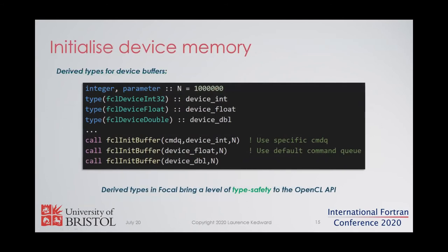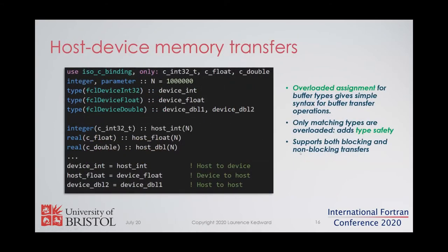We can introduce a few derived types for typed buffers — these are essentially 1D arrays that reside on the device. We have typed buffers for integer, float, and double, and we can initialize these with n elements using the syntax shown here. With these typed buffers we can perform data transfers between the host and the device using a very simple overloaded assignment operator. The assignment operator is only overloaded for compatible host types, so we've added a level of compile-time type safety to the OpenCL API, with compatible host types taken from the ISO C binding.